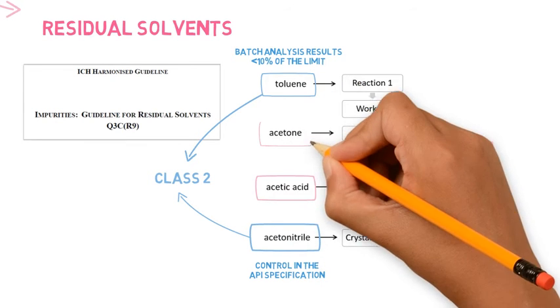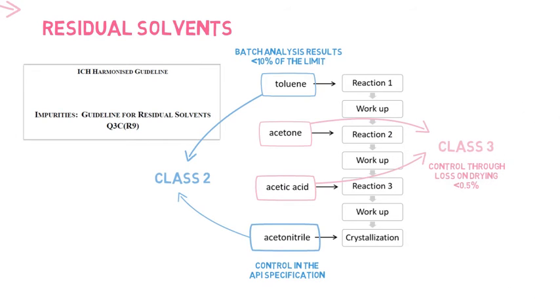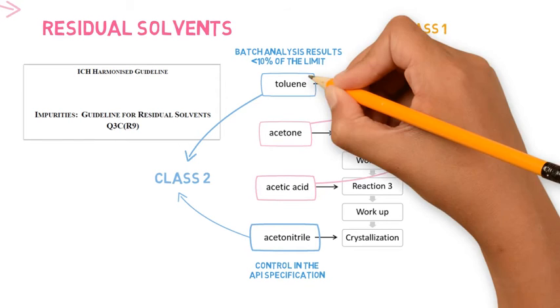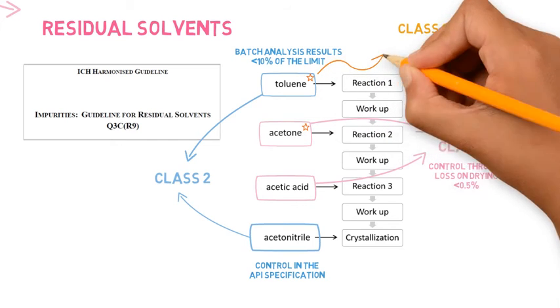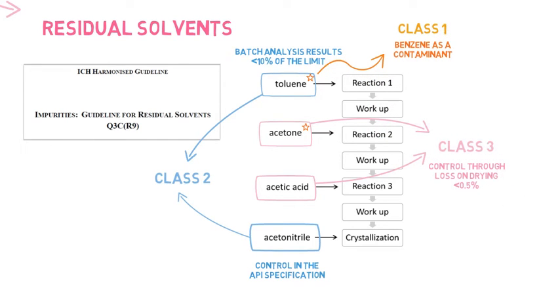Class 3 solvents can be controlled through the non-specific test lost on drying, in case this is part of the API specification with a limit of 0.5%. In case any class 1 solvent may be present as a contaminant of the solvents used, it should also be controlled or have its absence justified.